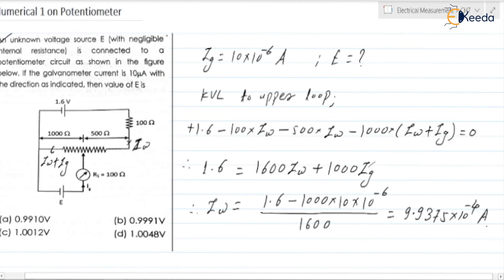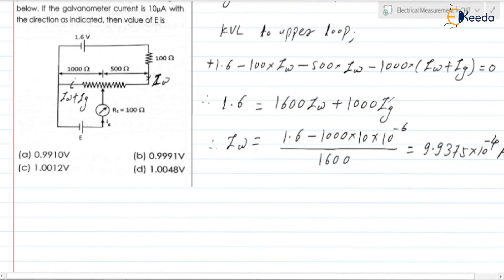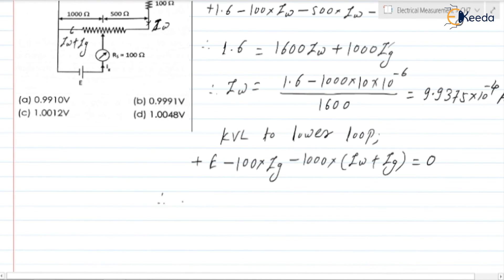9.9375 into 10 to the power minus 4, it is ampere. This is the Iw. Next, can we apply KVL to the second loop? Yes, that is the lower loop. So KVL to lower loop we can write it is plus E minus 100 into Ig minus 1000 into Iw plus Ig is equal to 0. From this we can write E is equal to